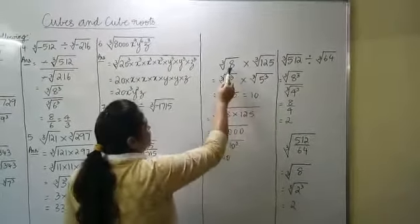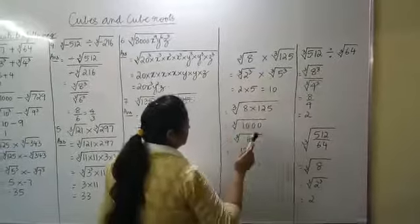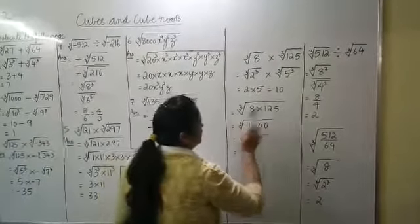Clearly, cube root of A into cube root of B is equal to cube root of A into B. There we go.